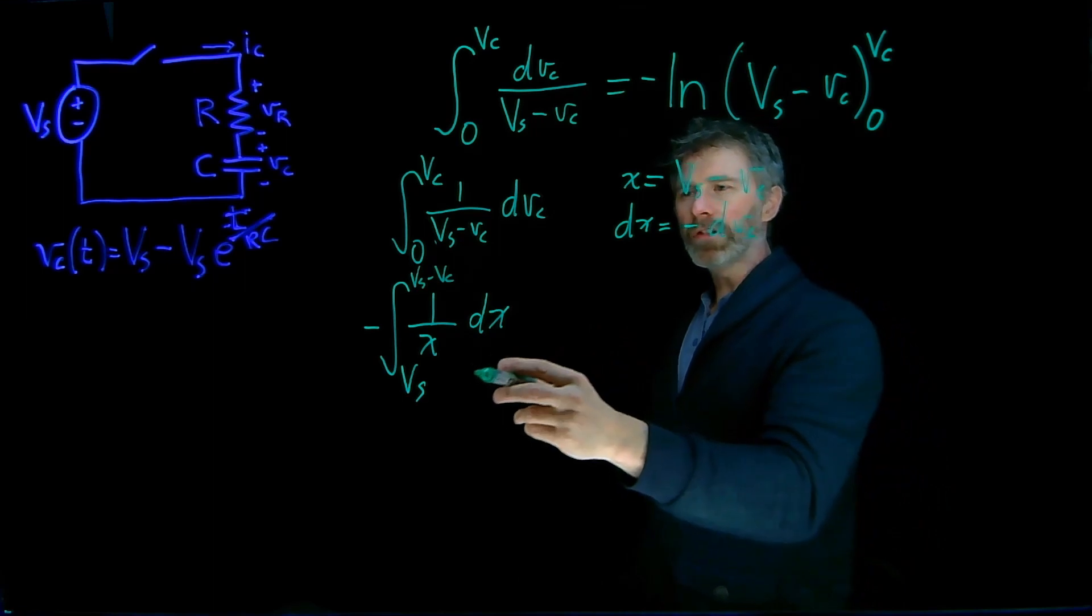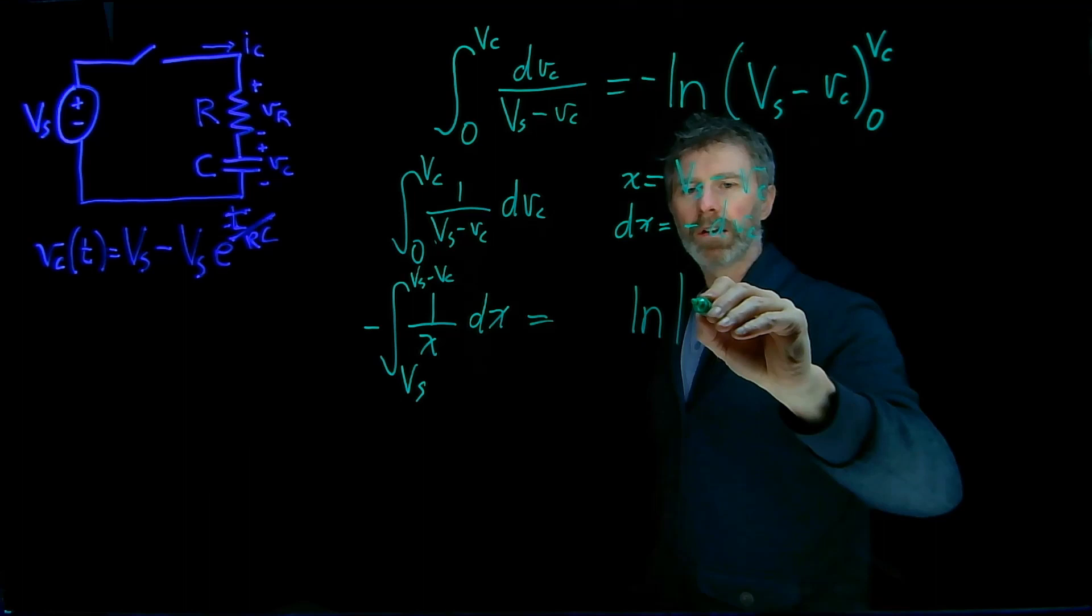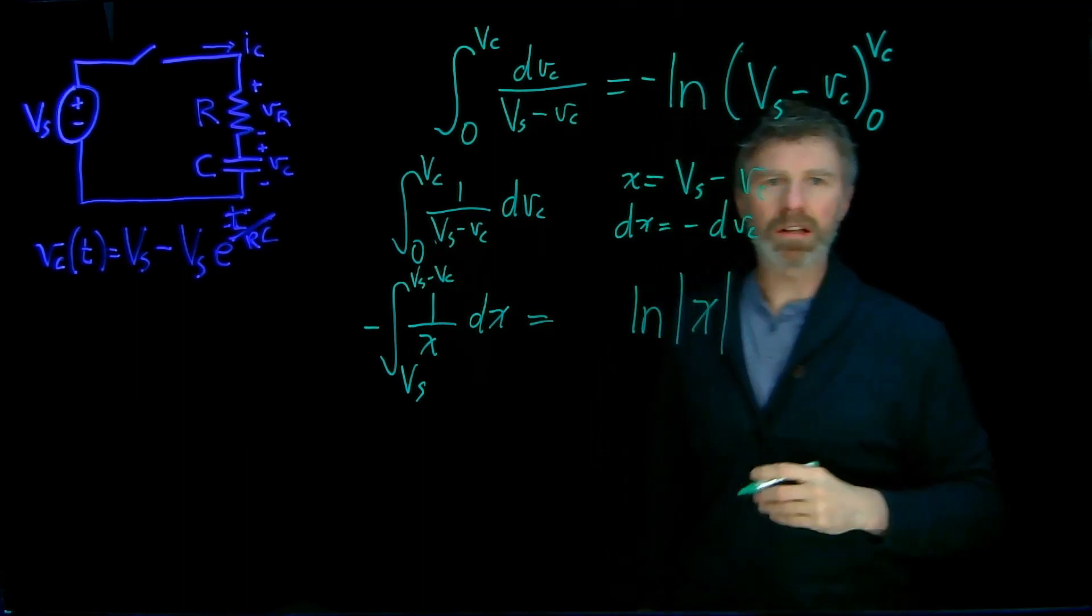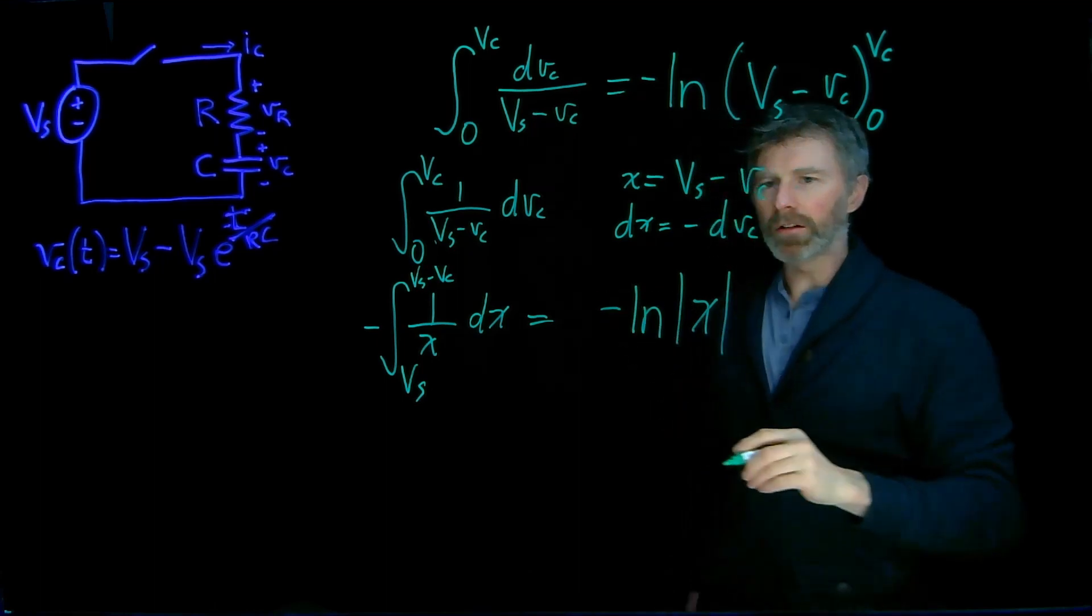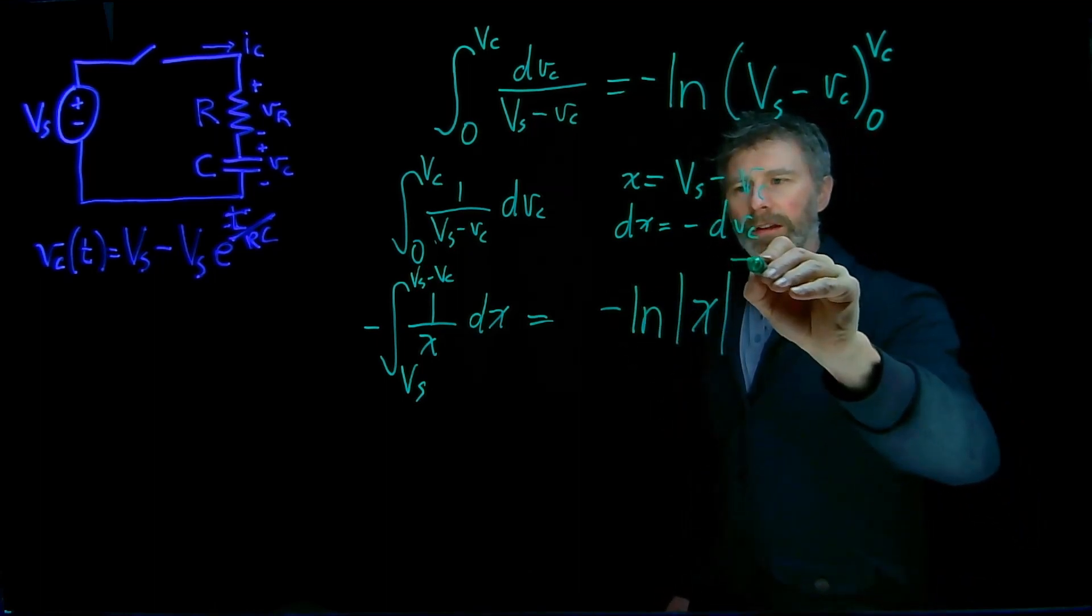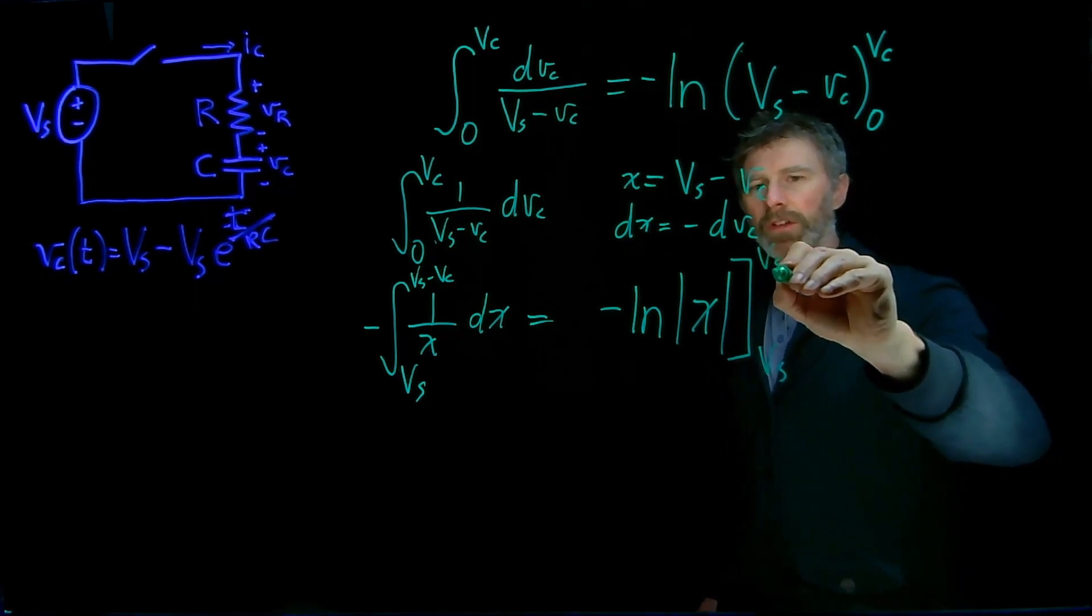Well, the integral of 1 over x is the log of x, the absolute value of x. I had that negative sign there, so I need to put the negative there, and I'm integrating from Vs to Vs minus Vc.